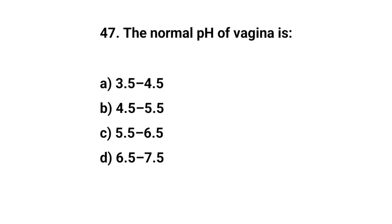Question No. 47. The normal pH of vagina is? The right answer is A: 3.5 to 4.5.